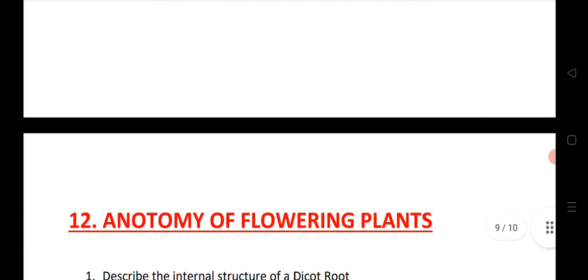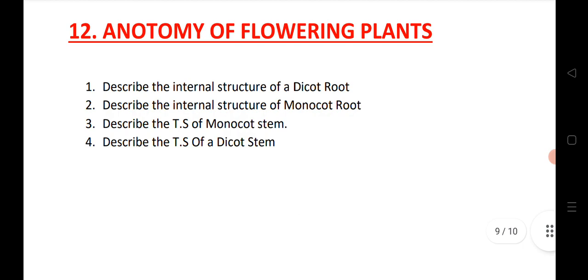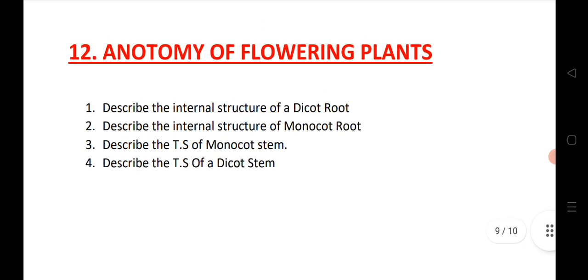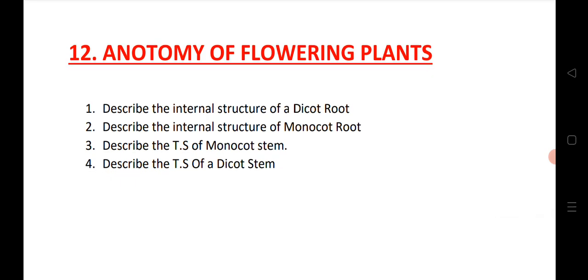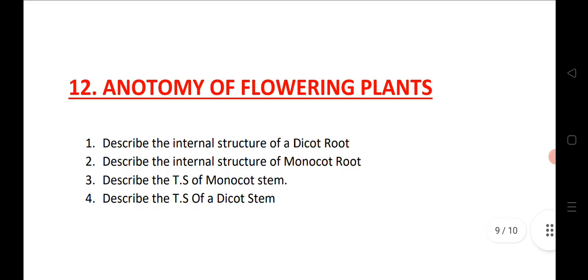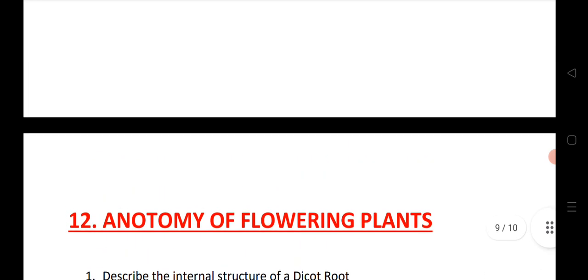The next chapter is anatomy of flowering plants — histology and anatomy of flowering plants. Describe the internal structure of dicot root, monocot root, and stem of dicot and monocot. These are 4 LAQs — very important LAQs for Botany.